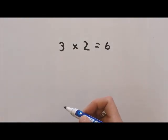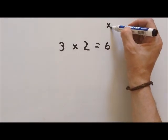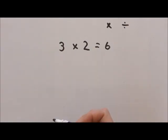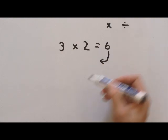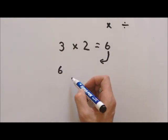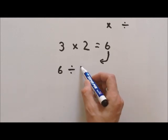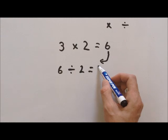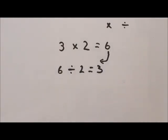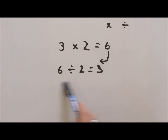Okay, so if the inverse of multiplication is division, we just switch it around like this. So I put six, and here I put divided by two equals three. So we just reverse the whole problem to get the inverse operation of it. Let's do another one.